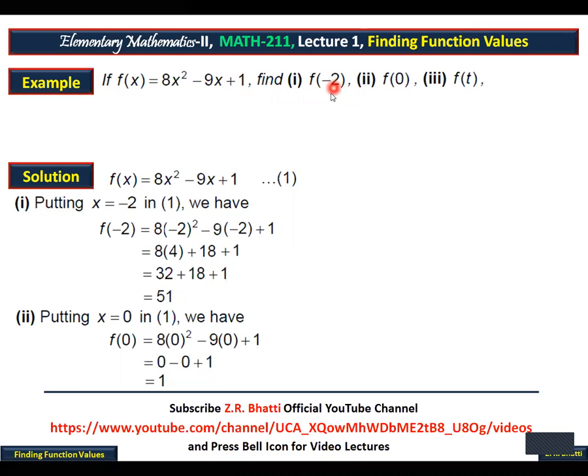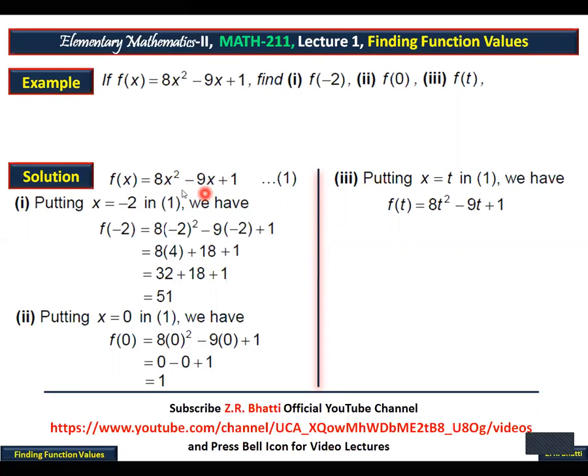In particular, the answer for f(-2) was 51. When we did f(0), the answer was 1. Now part (iii): f(t). In place of x, put t. Wherever x is, put t. So 8t² minus 9t plus 1.